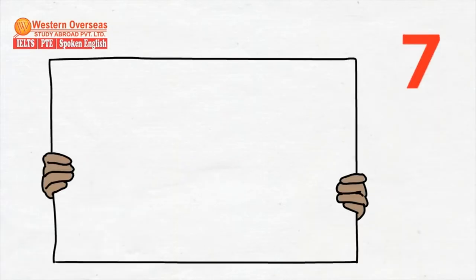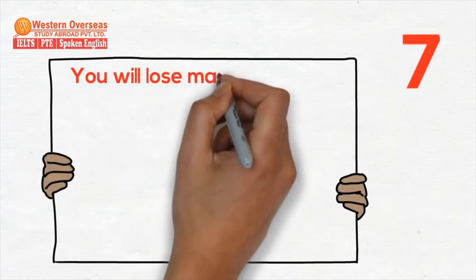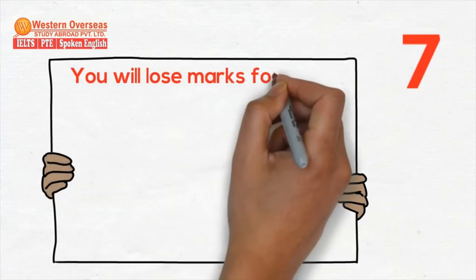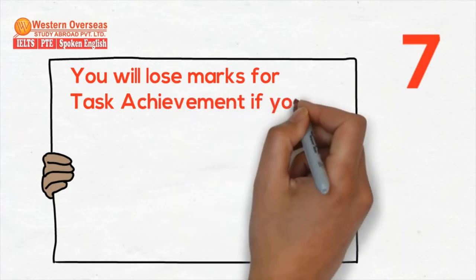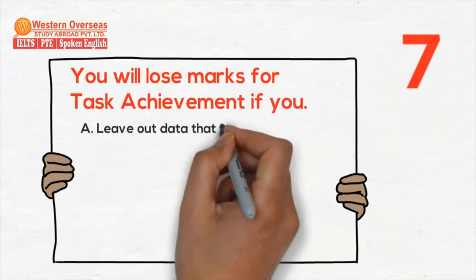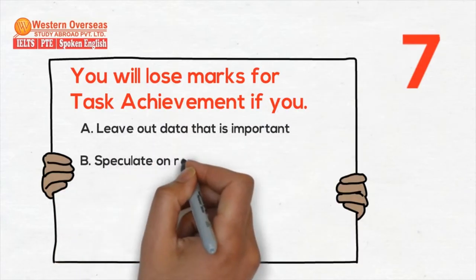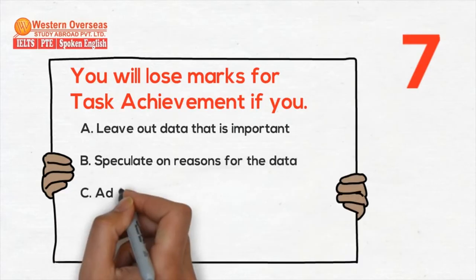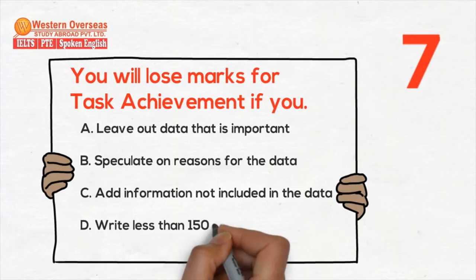Tip number seven: you will lose marks for task achievement if you — first, leave out data that is important; second, speculate on the reasons for the data; third, add information that is not included in the data; fourth, if you write less than 150 words.